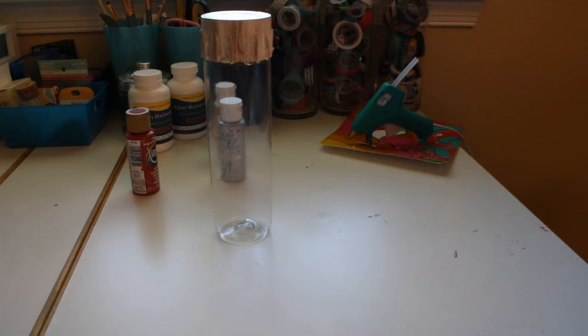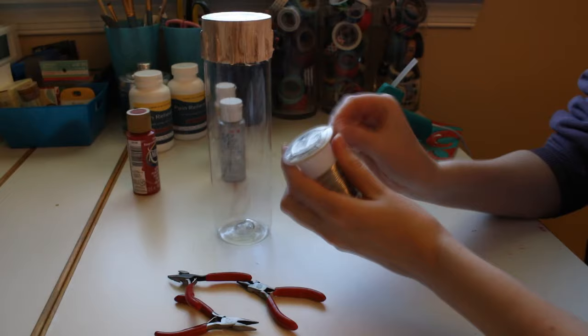Cutting a piece of wire, I used 18 gauge, I bent it in the middle to form a circle. Then I trimmed it down to size and hot glued it onto the cap.